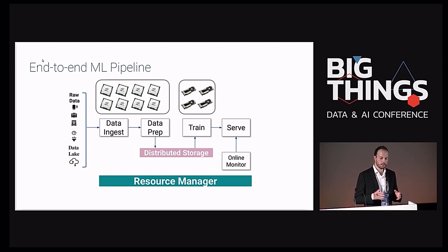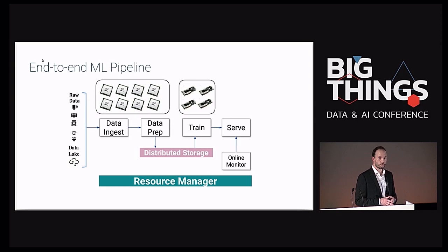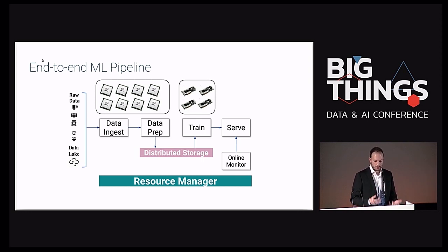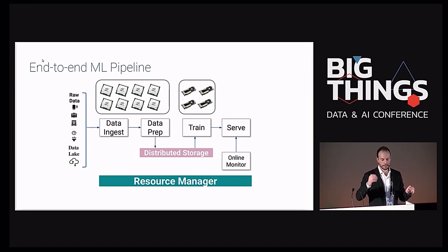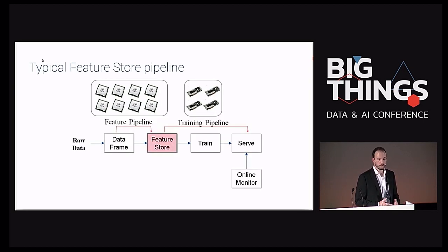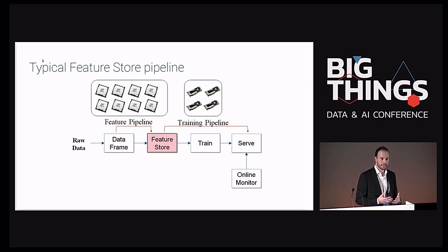One way to do all this would be to have a single pipeline where you have all the stages within the same processing framework. There is a project in the Apache Spark community called Hydrogen which tries to do that, but it hasn't been released yet because it really is a complex problem. The other way is to have distributed storage where you separate the data preparation and transformation part from the machine learning training part. We have the concept of the feature store — a place to manage your feature data — where you do feature engineering and then store it in a very scalable distributed file system.